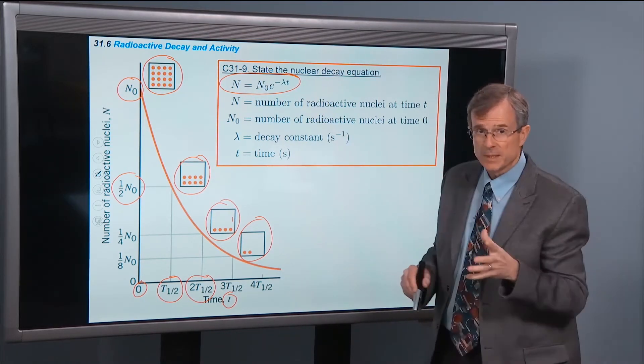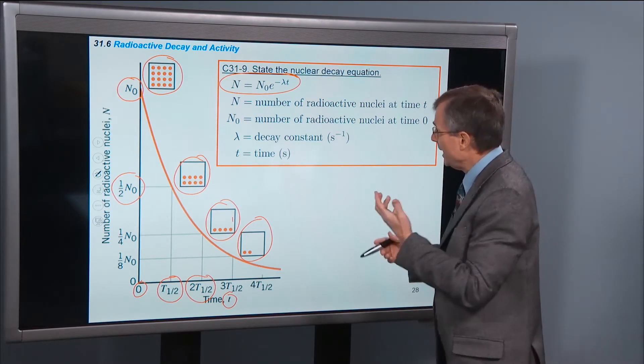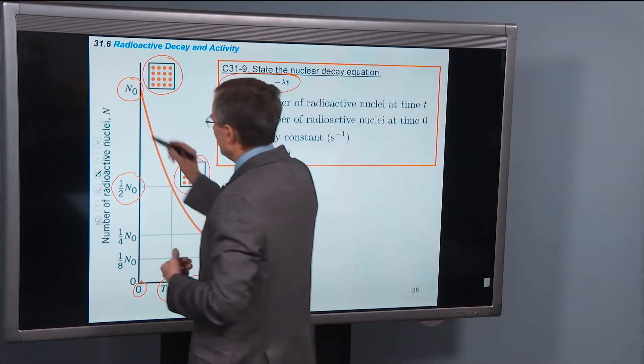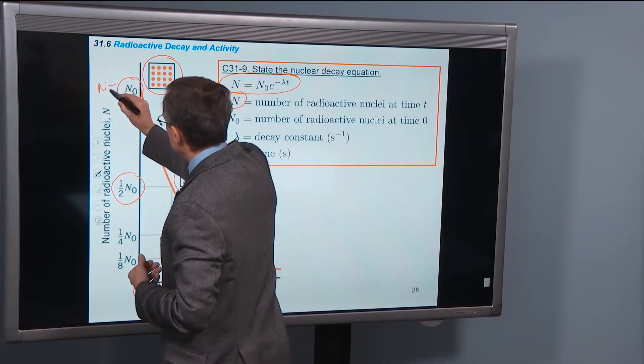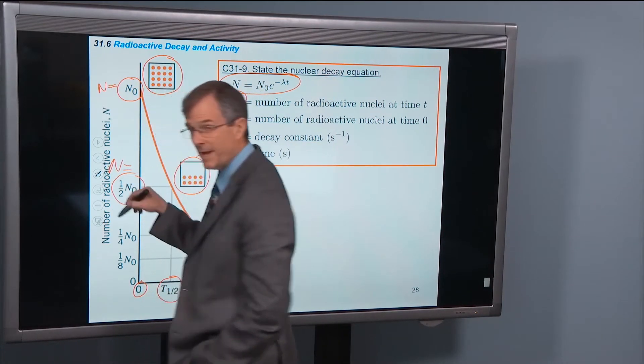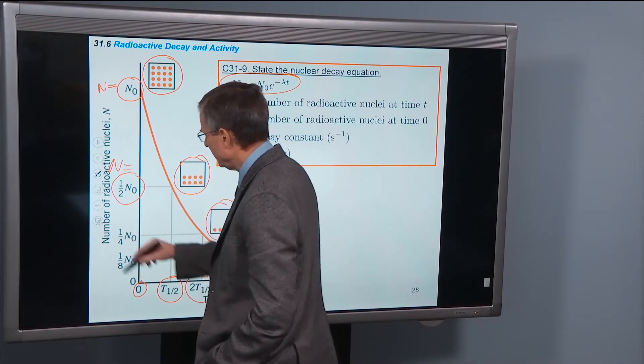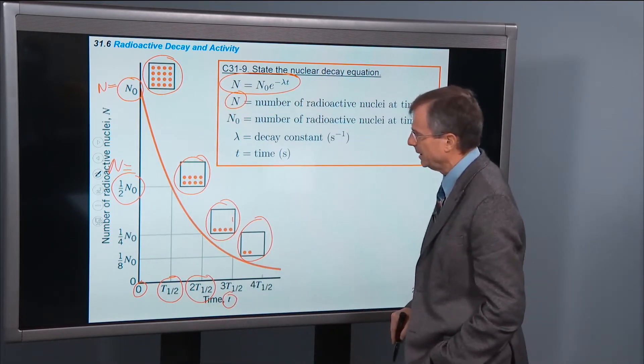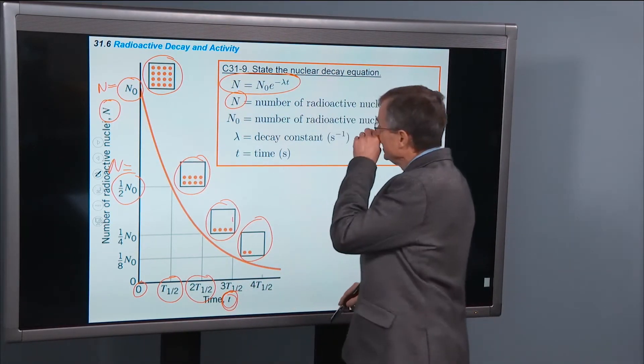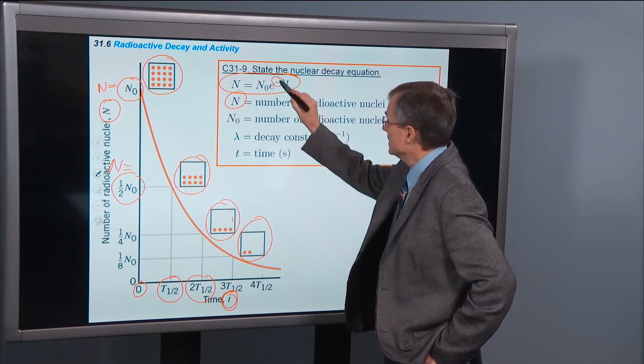But it requires the calculus, so we'd have to take a step in that direction. So N is the number of radioactive nuclei at time t. So initially N equals N0. After one half-life, N equals 1 half of N0. After two half-lives, N equals 1 fourth of N. So on the y-axis is N, on the x-axis is t, and it's a decaying exponential. That's why we have this minus sign here.